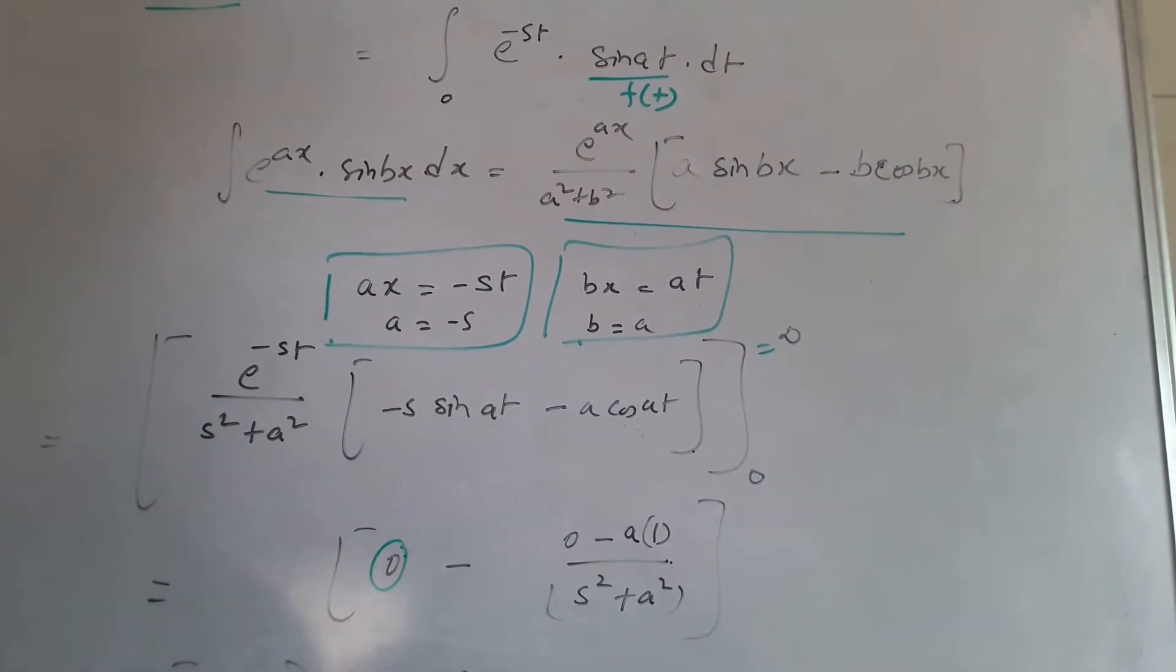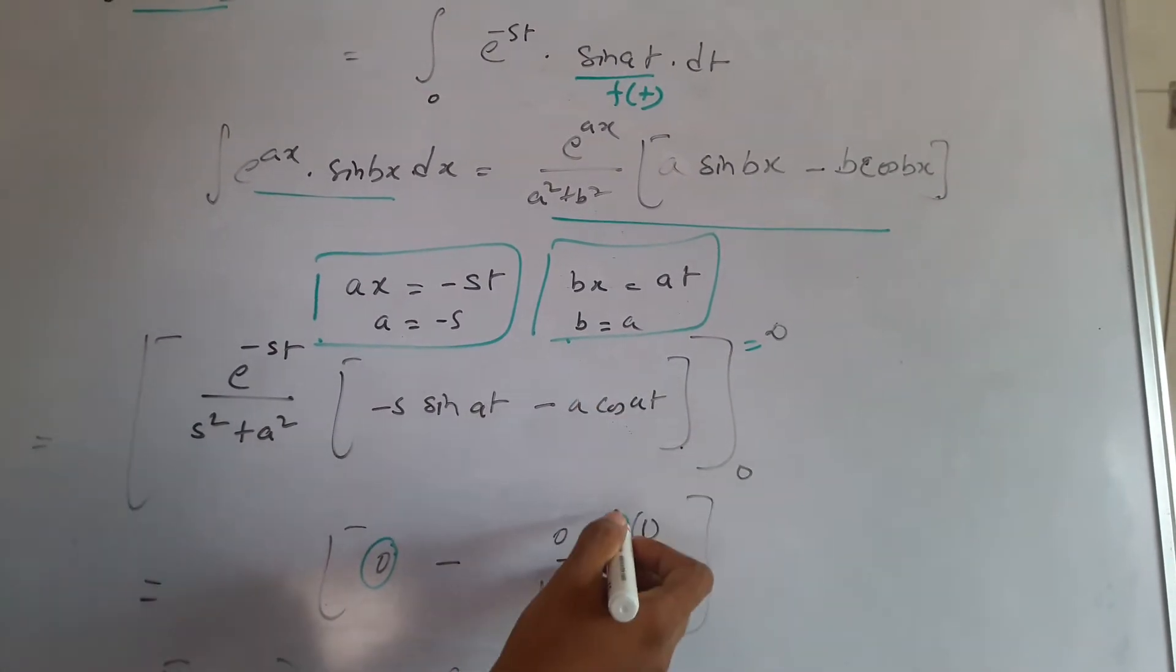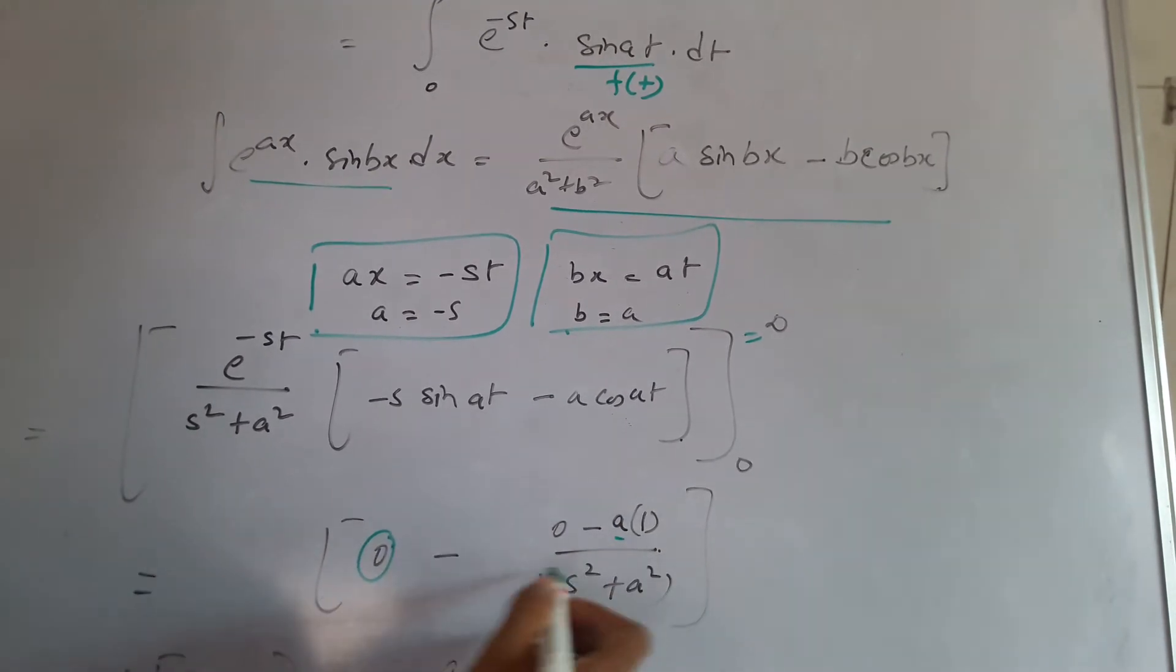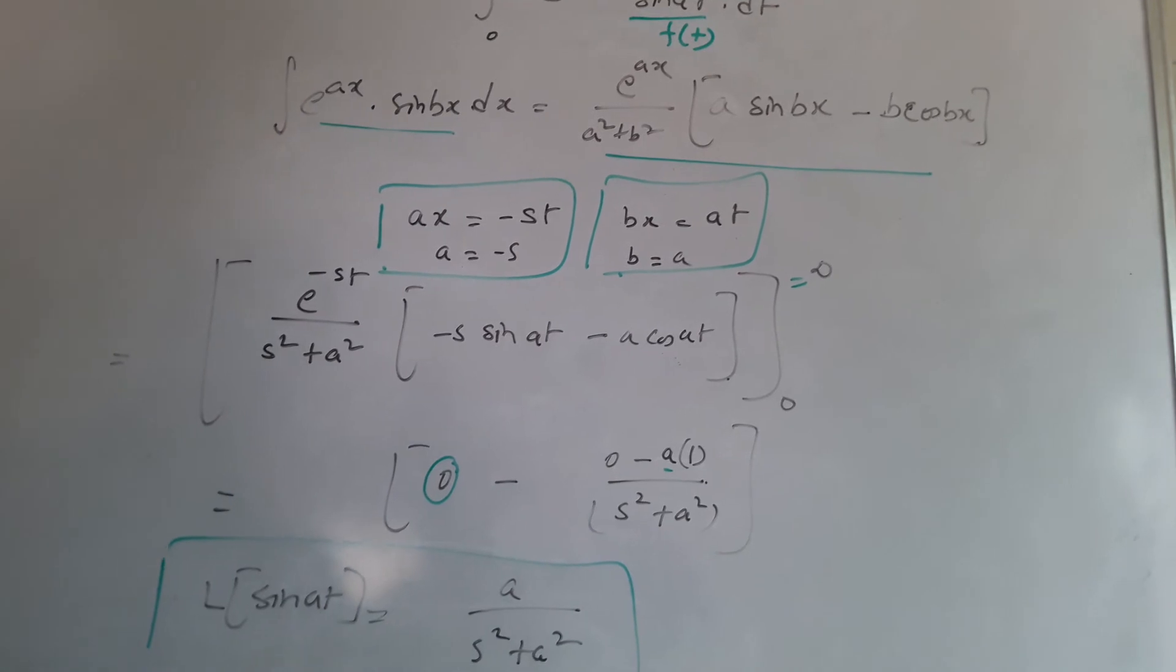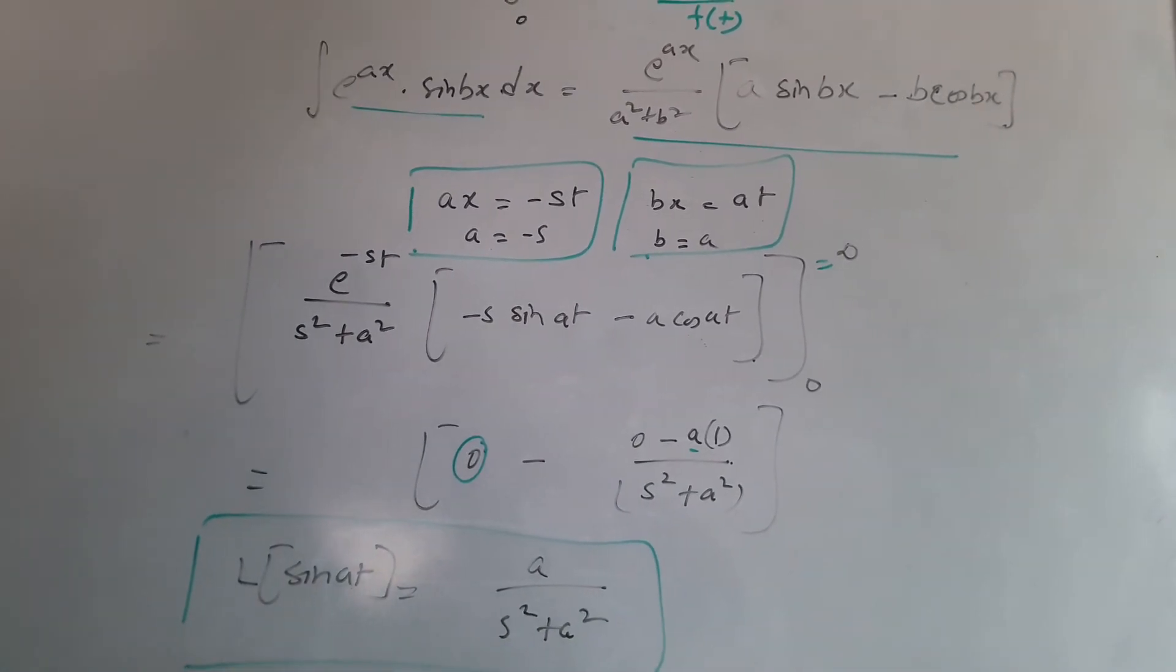I get zero, sine zero is zero, and cos zero is one, so I'll be left with this. Minus minus becomes plus, and I get the Laplace transform of sine at is a by (s squared plus a squared).